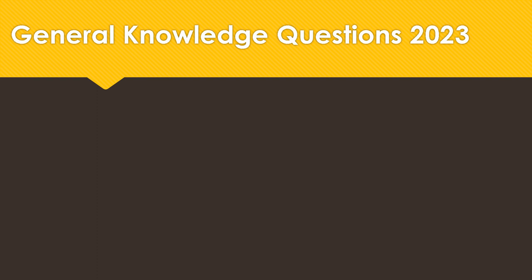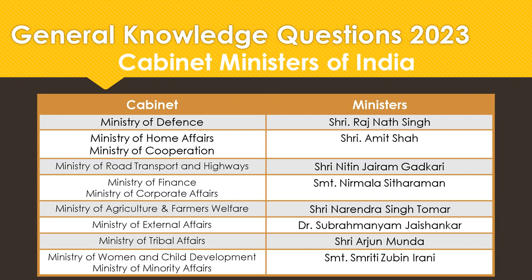We covered most of the key current affairs of 2023 so far. Now in upcoming slides I'm going to share the current cabinet ministers of India, so that you are informed about who is looking after what. Ministry of Defence: Sri Rajnath Singh. Ministry of Home Affairs and Ministry of Cooperation: Sri Amit Shah. Ministry of Road Transport and Highways: Nitin Gadkari. Ministry of Finance and Ministry of Corporate Affairs: Srimati Nirmala Sitharaman. Ministry of Agriculture and Farmers Welfare: Sri Narendra Singh Tomar. Ministry of External Affairs: Dr. Subrahmanyam Jaishankar. Ministry of Tribal Affairs: Sri Arjun Munda. Ministry of Women and Child Development and Ministry of Minority Affairs: Srimati Smriti Zubin Irani.